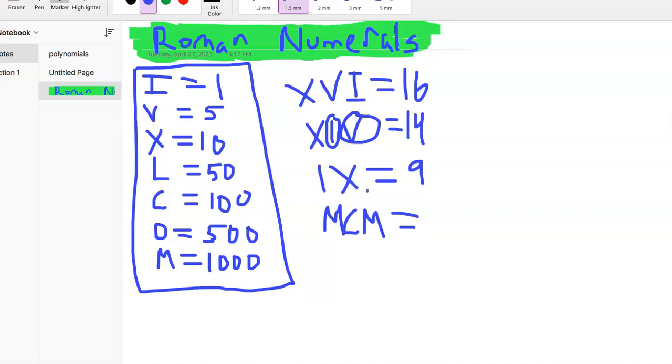But here we have C, a smaller value (100), and then M coming after it, a larger value (1000). In that case, we subtract these two numbers: 1000 minus 100 is 900. Then we add them together: that M in the beginning was 1000, which leaves us with 1900 for our final answer.